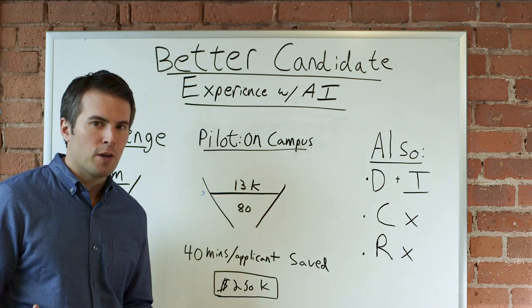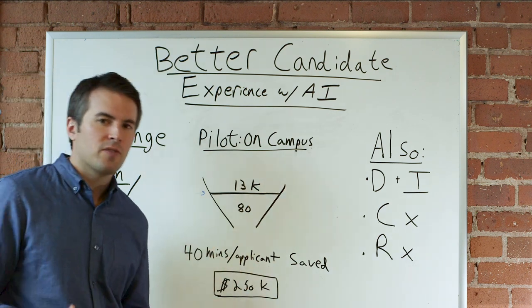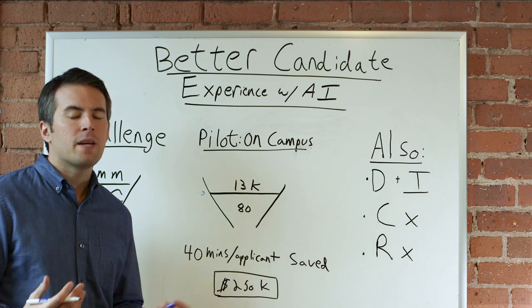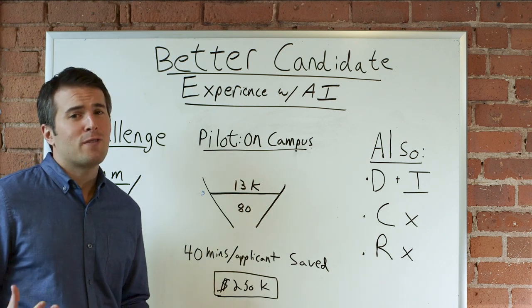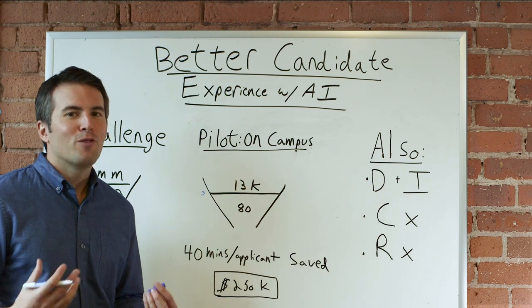If you do all the math out—40 minutes saved, 13,000 applications, how much does a recruiter get paid—you're going to get about $250,000 worth of savings, which is huge. We love the hard ROI.